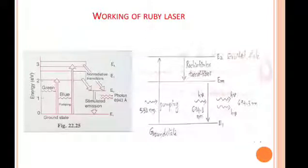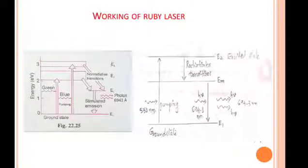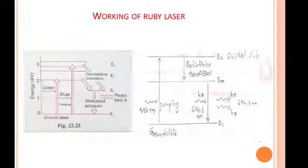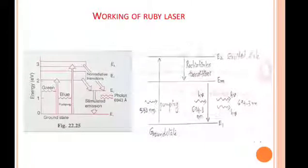When the flash lamp is activated, the xenon discharge generates an intense burst of white light lasting for a few milliseconds. The chromium ions are excited to the energy level E2, or the excited state, by absorbing the green and blue components of white light.